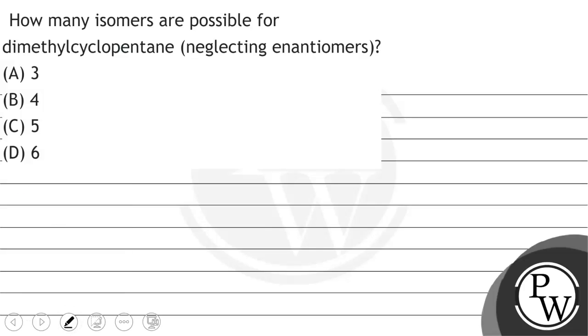Hello, let's read the question. The question says: how many isomers are possible for dimethyl cyclopentane, neglecting enantiomers?